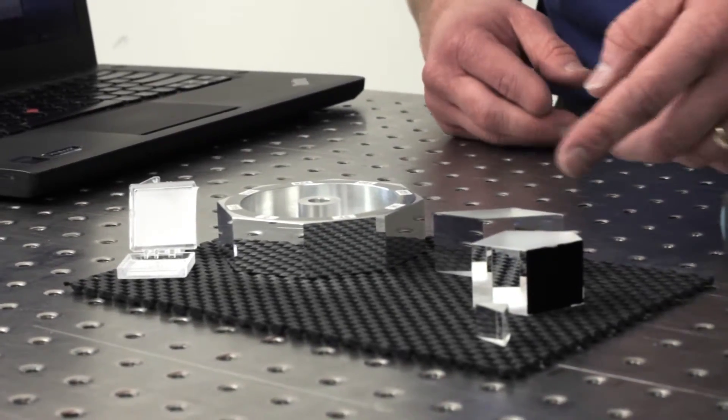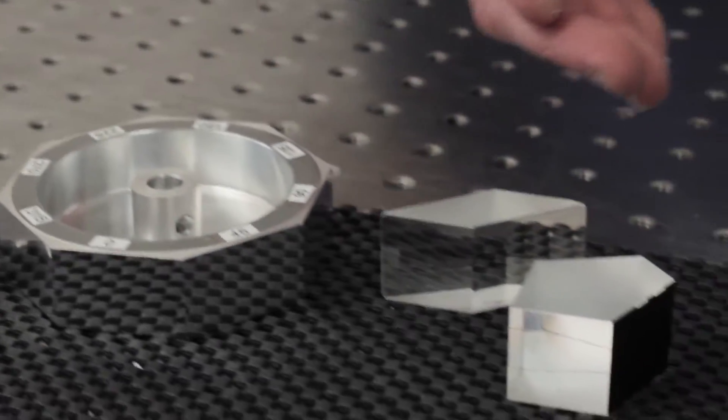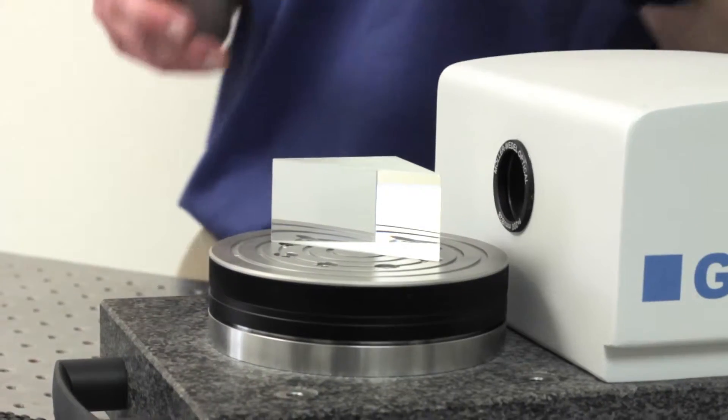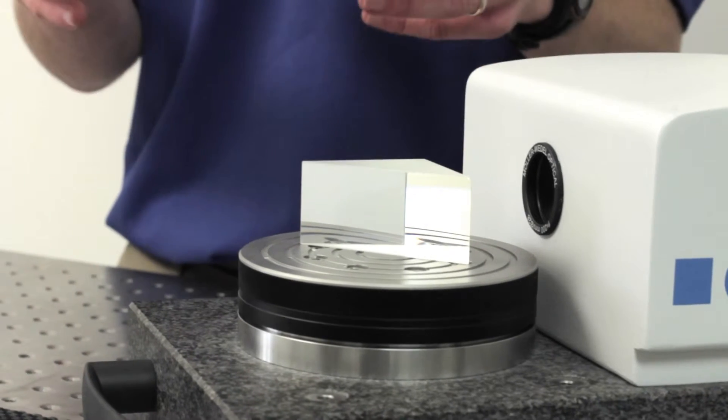We can also measure pentaprisms and other prisms as well as polygons. One interesting hardware provision in the autocollimator is to suppress retro-reflected images so those don't bother your measurements.